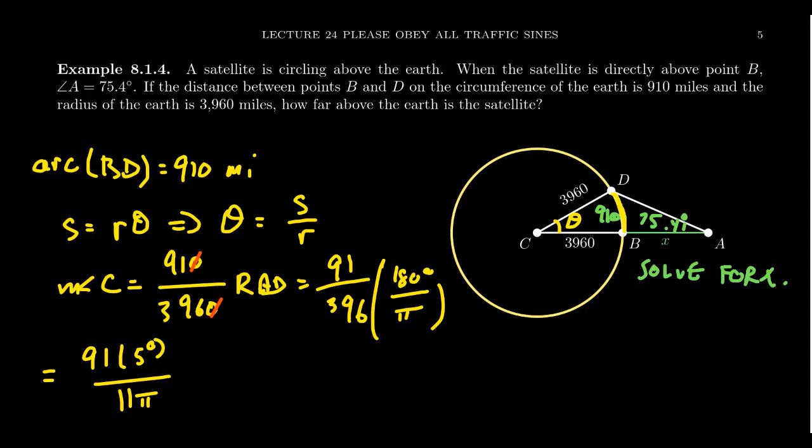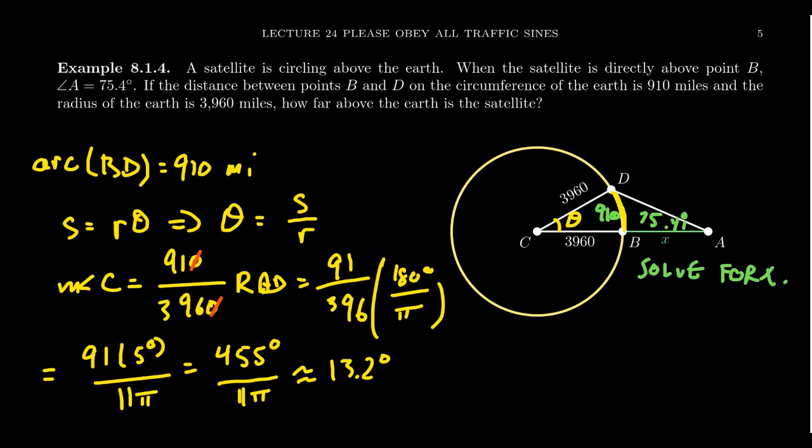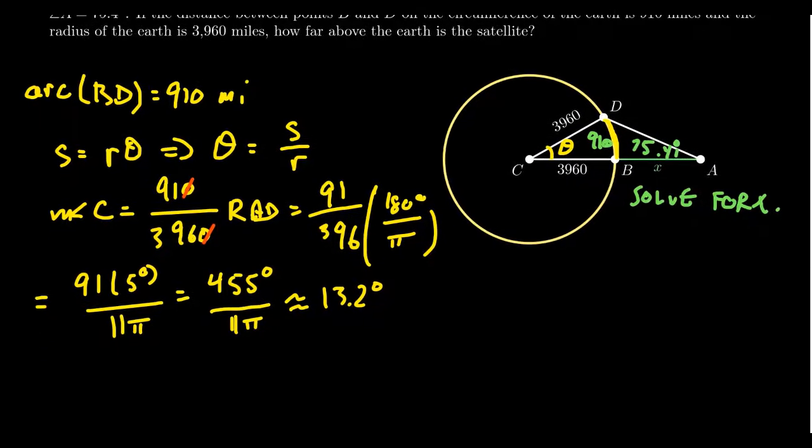And we can take 91 times 5. That gives us 455 degrees over 11 pi. And we're going to leave this exact right now. I mean, I can approximate if you want to. And so we'd get that the angle C is approximately 13.2 degrees. And I actually do. I changed my mind. I do want to use the approximation.